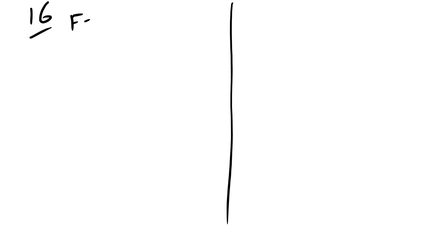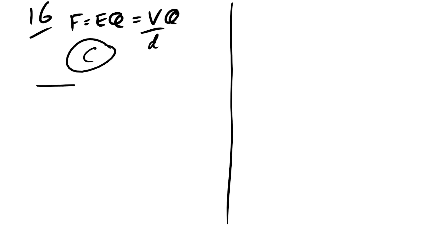Question 16: what is the magnitude of the electrostatic force on the particle? Trick question — in a uniform electric field between parallel plates, F = EQ where E = V/d, which is the same everywhere. The force is the same regardless of position. Answer is C.